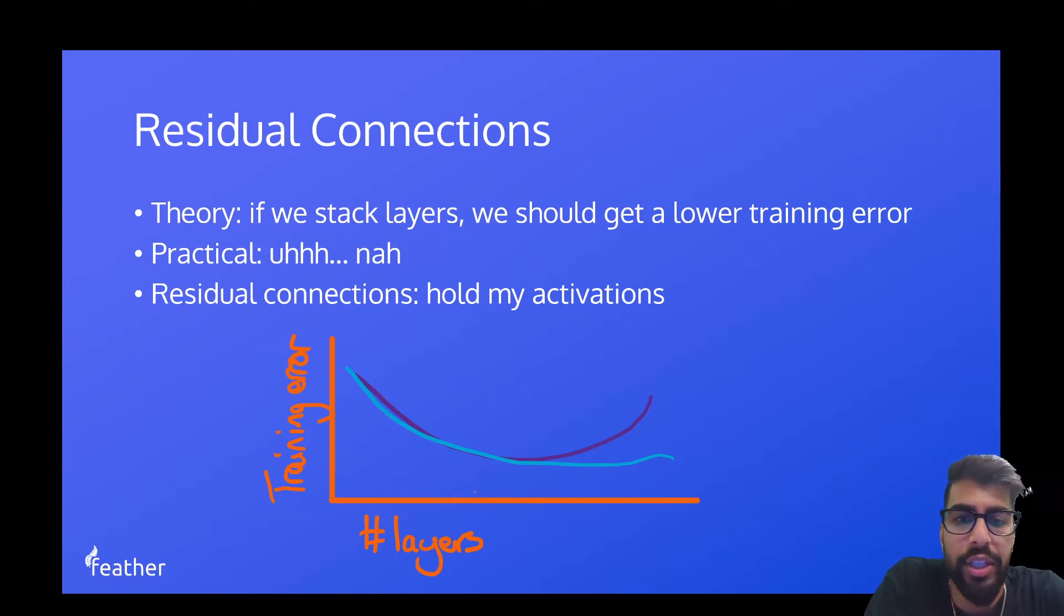And residual connections are hold my activations. So here on this little graph, I can visually demonstrate what I mean by that. So on the x-axis, we have the number of layers and the y-axis, we have the training error. So obviously, the lower the training error, the better. And this light blue line is meant to be the theoretical theory behind the deeper neural networks. Whereas the actual practicality is this dark blue line where there comes a point where we get diminishing returns on the number of layers that we have. Not even diminishing returns, we get adversarial returns. So after a certain amount of layers, we might start seeing our training error increase. And obviously, we probably are suffering from overfitting and a couple of other issues at this point.